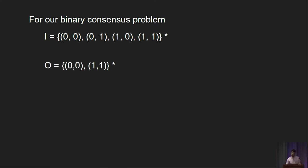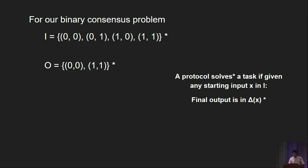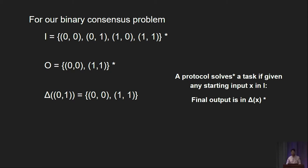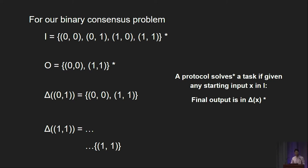The output set is even simpler: we only have 00 and 11. We don't have 01 or 10, because in those cases consensus is not achieved. Now let's think about the delta relation. If the nodes are given different inputs, say 01, then we can let them terminate with 0 altogether or 1 altogether, so delta(01) maps to the set {00, 11}. Suppose both nodes are given the same input — say both are given 1. Delta(11) maps only to the set {11}, not including 00, because 0 is not one of the inputs for either node. We have now described the binary consensus problem more formally.